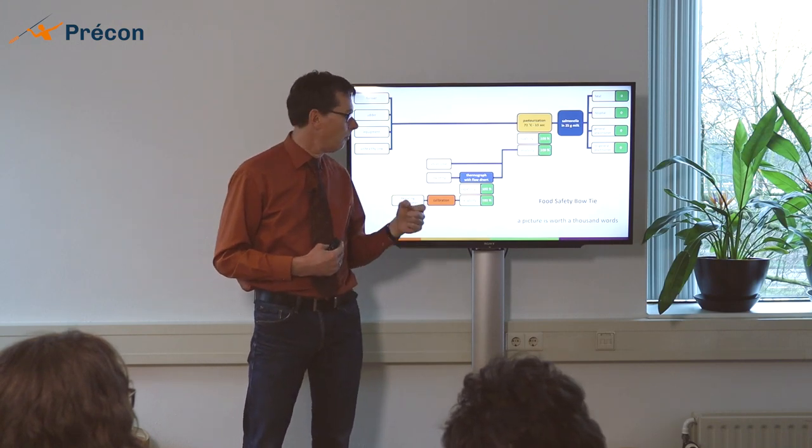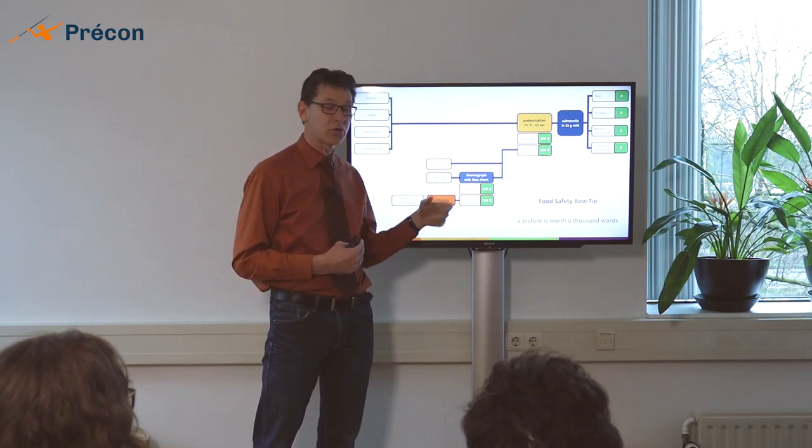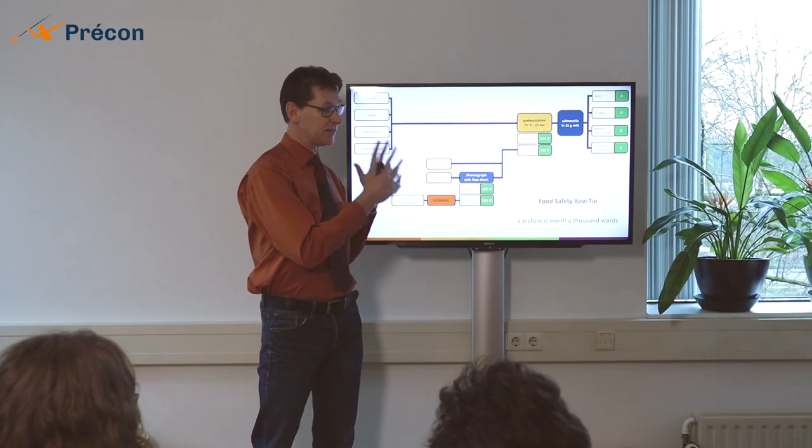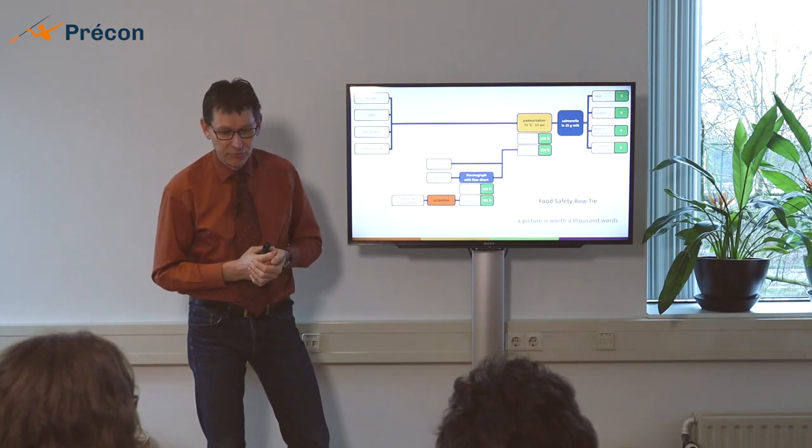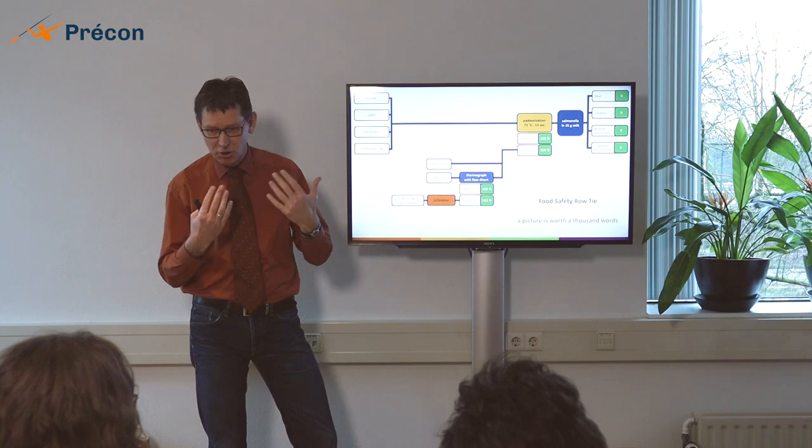That we maybe need to spend more money on monitoring or more money on control measures or maybe more money on training. So HACCP is a very wordy thing, as you saw in the ten definitions. This bow tie is a picture and a picture is worth a thousand words, right? So it makes an easier conversation.